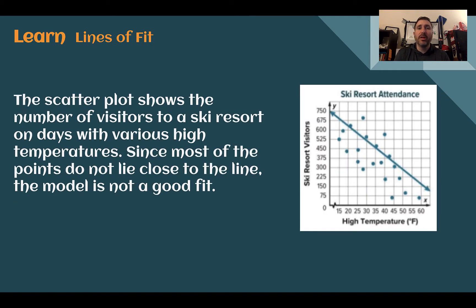Here we have another scatter plot showing the number of visitors to a ski resort on days with various high temperatures. We can see here the points are more spread out, but if we drew a line we're trying to get as many above it or below it. In fact, I might say there's too many below compared to above. Maybe we should draw it down this way a little bit more.